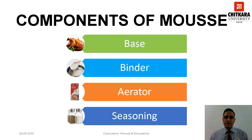There are basically four components required to make Mousse: base, binder, aerator, and seasoning. A base can be a mixture of cooked meat or vegetable which has been turned into a puree. A binder is an agent which binds together the various components of a Mousse; a thick béchamel or velouté can be used, and additionally aspic or gelatin can also be used. An aerator provides volume and makes a Mousse rich without adding much to its weight — double cream is used for this purpose. A Mousse must be well seasoned; salt and white pepper are generally used.